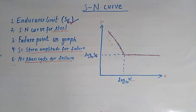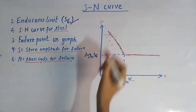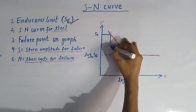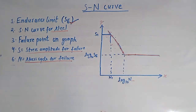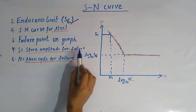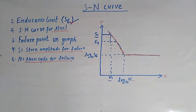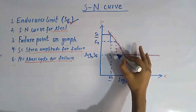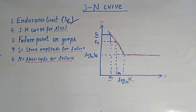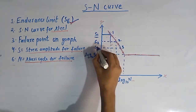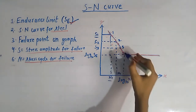Now let us understand this graph and then find out how to determine the endurance limit. Suppose S1 is a value of stress on the Y-axis; corresponding to this S1 there will be a value N1 on the X-axis. So S1 denotes the stress amplitude for failure corresponding to N1 cycles. Similarly, S2 denotes the stress amplitude for failure of the steel specimen corresponding to N2 cycles.